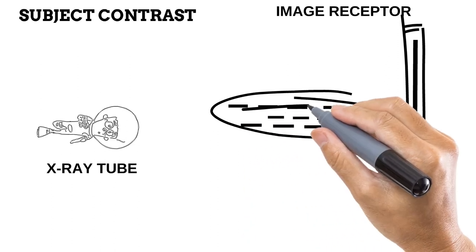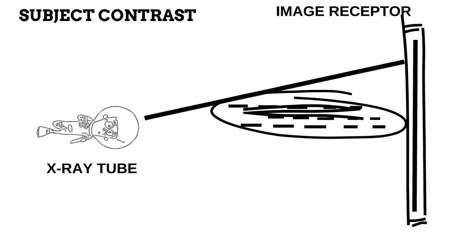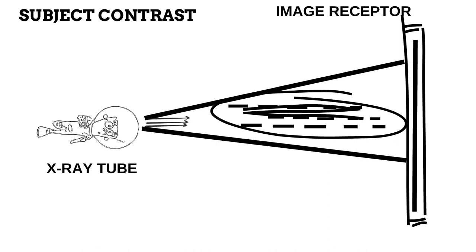Now imagine there is higher subject contrast due to the presence of a thicker structure within the part — think of bone or contrast media. When our three photons try to pass through this anatomical part, only two out of three make it to the image receptor; one is absorbed completely by the thicker structure. Certain areas of the image receptor therefore receive fewer photons than others due to these differences in photon attenuation, producing an image with higher radiographic contrast.